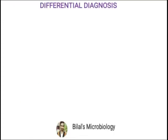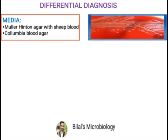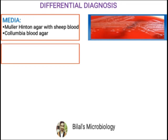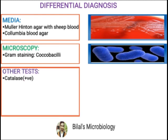If we talk about how to diagnose Listeria monocytogenes, we can use Mueller-Hinton agar with sheep blood or Columbia blood agar. On these media, you can observe colonies and look for a hemolysis factor. Since this bacterium is gram-positive, you can use gram staining and you will observe a purple color under the microscope in a short chain form.